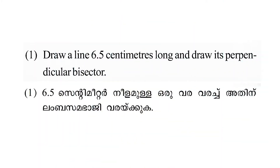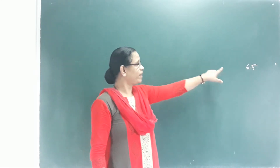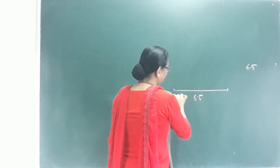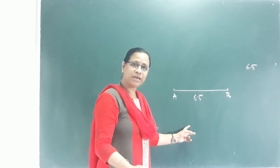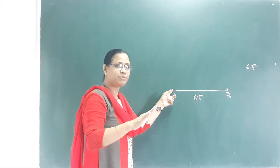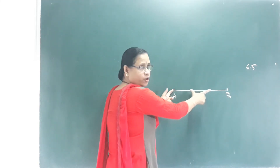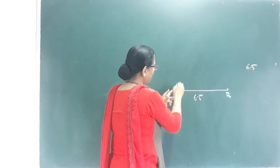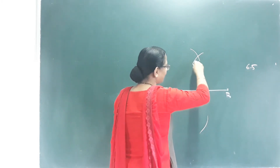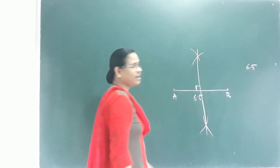Page number 29 is the practice problem. First, draw a line 6.5 centimeters long and draw its perpendicular bisector. We draw line AB at 6.5 centimeters. For the perpendicular bisector, we must ensure that at this point we use more than half by the dimensions. We place the compass at each endpoint and draw arcs more than half the length. The arcs intersect, and we join those points — it will be the perpendicular bisector.